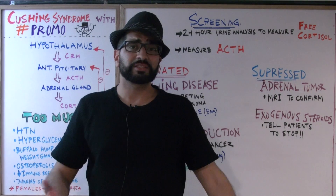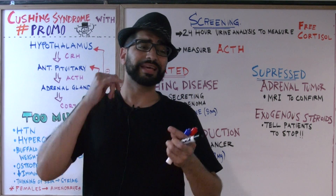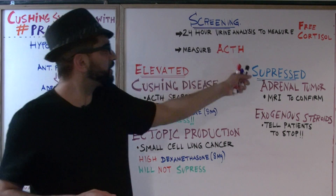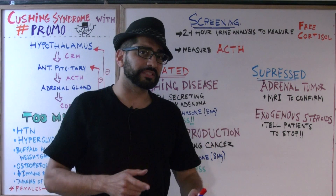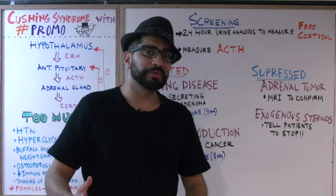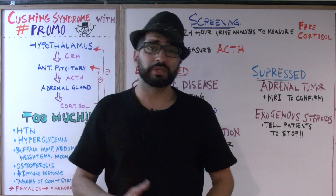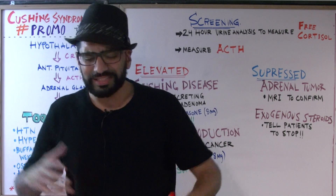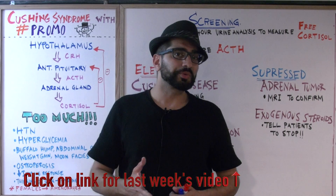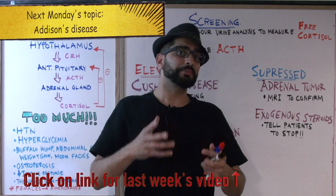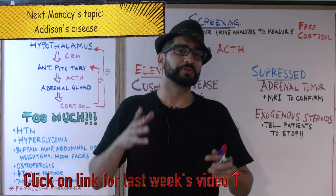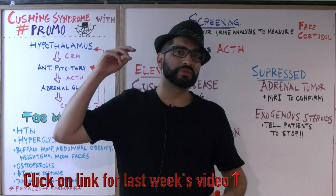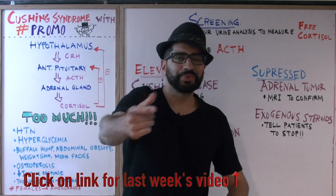That's it for today — a quick but very important lecture. Review all the causes, why ACTH will be elevated, and why ACTH will be suppressed, and know the differences. Next week we're going to talk about the opposite: what happens when there's too little cortisol — Addison's disease. Until then, give the video a thumbs up, share it, subscribe to the channel, and comment below. See you next week on Med School Mondays with Promo!